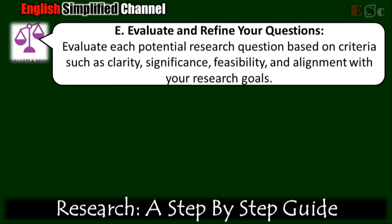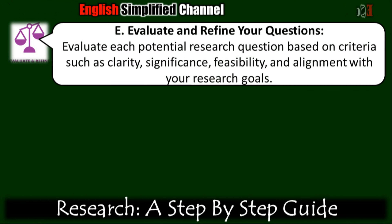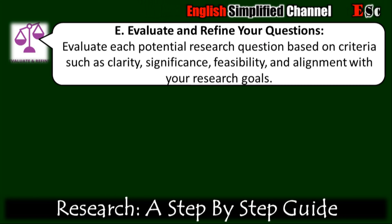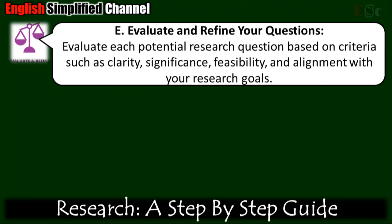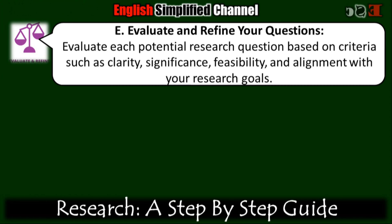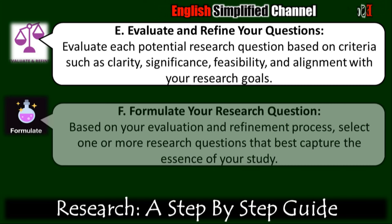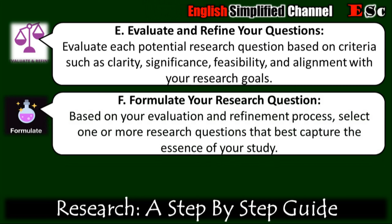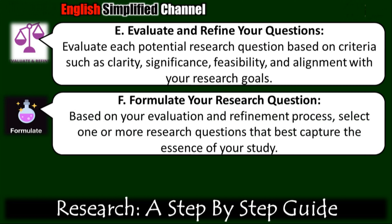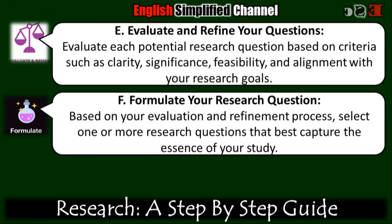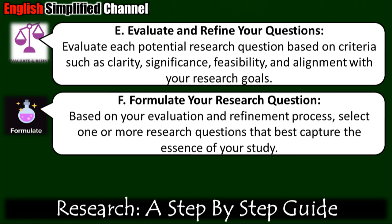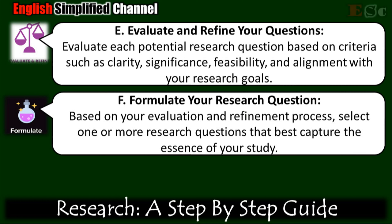Step e: Evaluate and refine your questions. Evaluate each potential research question based on criteria such as clarity, significance, feasibility, and alignment with your research goals. Revise and refine your questions as needed to ensure they are well-defined, focused, and capable of guiding your research effectively. Seek feedback from peers, mentors, or colleagues to help refine them. Step f: Formulate your research question. Select one or more research questions that best capture the essence of your study. Craft your research question in a clear, concise, and specific manner, ensuring it addresses the core issue or problem you want to investigate. Your research question should guide your inquiry, provide a framework for your study, and align with the objectives of your research.